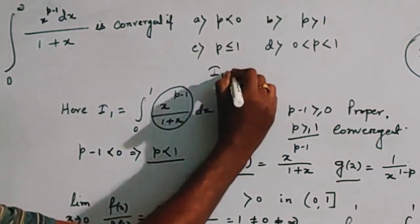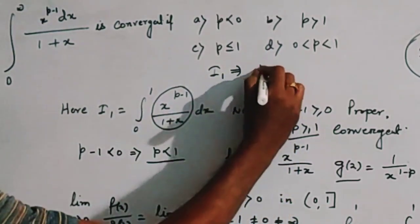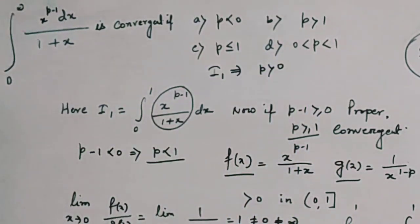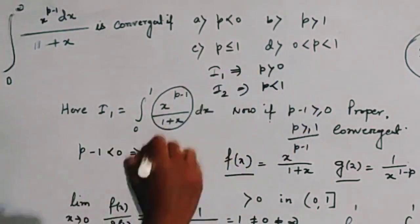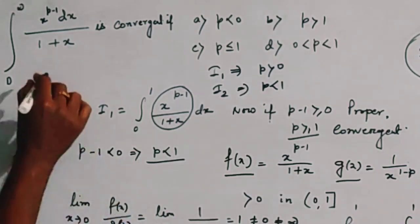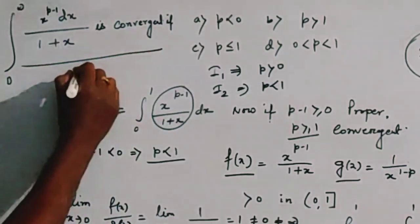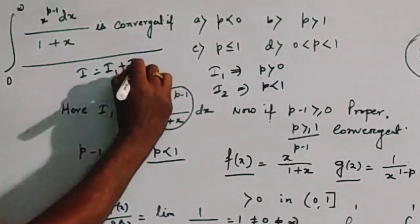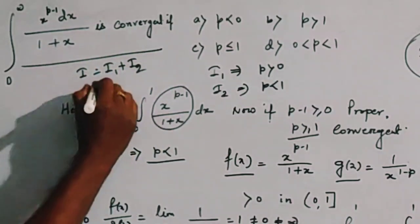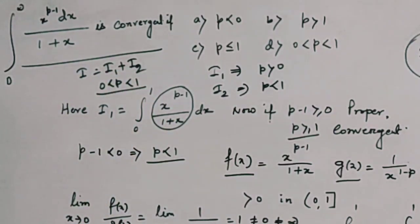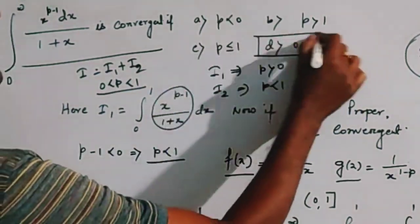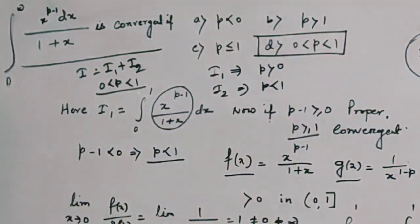For I1 we get the condition of convergence p greater than 0, and for I2 we get the condition of convergence p less than 1. For the full integral I equals I1 plus I2, the combined condition of convergence is 0 less than p less than 1. So our answer is the fourth option: 0 less than p less than 1. Thank you for watching.